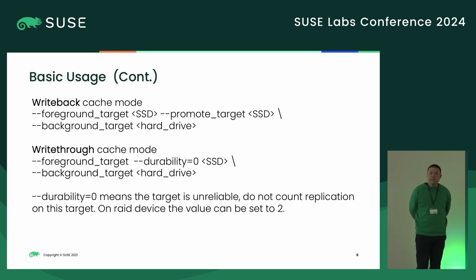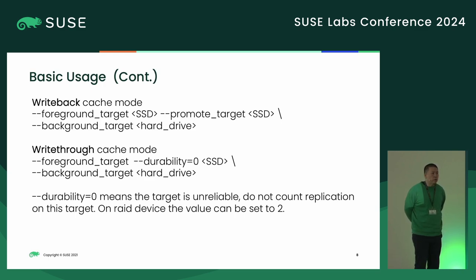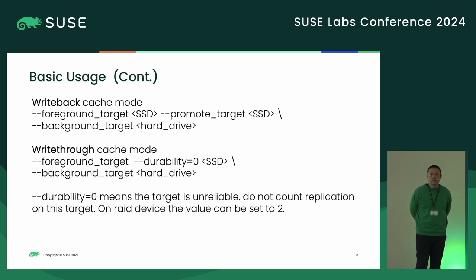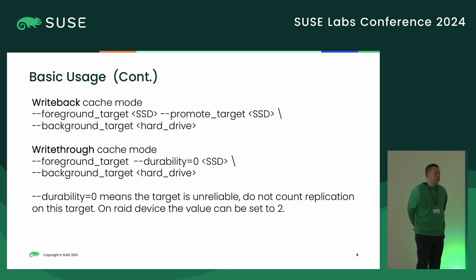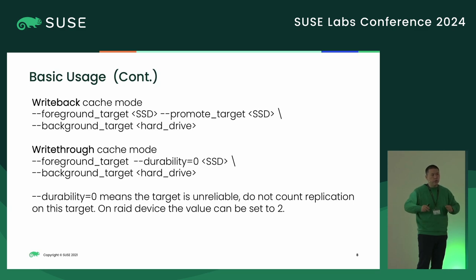There is a special optimization: if the background target is a RAID — for example RAID 1, RAID 10, or RAID 5 — we can set the durability of that target to 2, meaning the target itself already has enough durability and we don't need to do extra durability at the file system level.